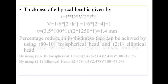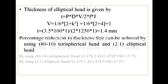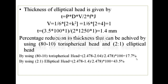To calculate the thickness of the elliptical head, the formula t = p·D·v / (2·f·j) is used, where v = (1/6)(2 + k²) and k is the major to minor axis ratio. Substituting k = 2 gives v = 1, and the resulting thickness for the elliptical head is 1.4 mm. The percentage reduction in thickness achieved by using the 80-10 torispherical design compared to the 106 design is 17.7%, and by using the 2:1 elliptical head the percentage reduction in thickness is 43.5%.